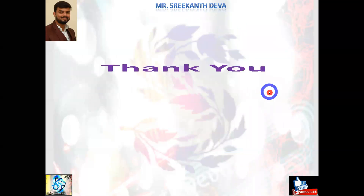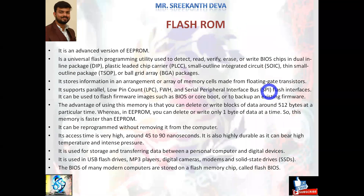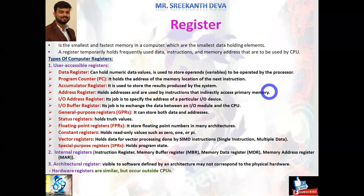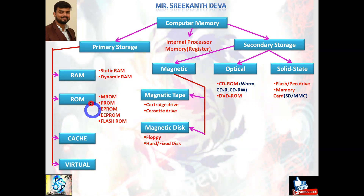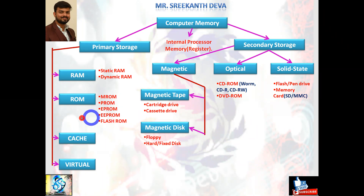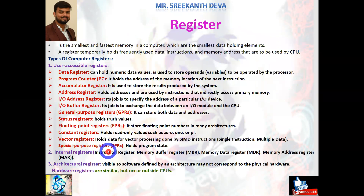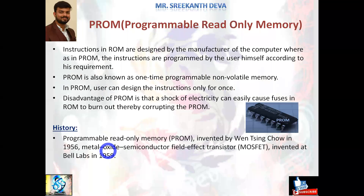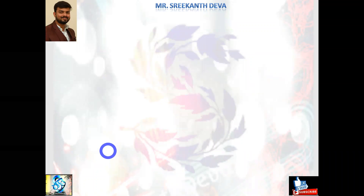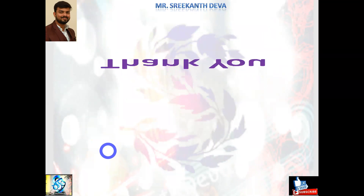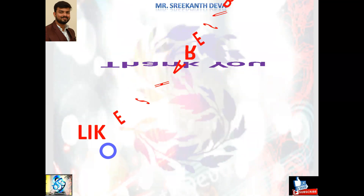This completes our discussion of all primary memories. Today we discussed in detail: RAM and ROM, cache and virtual memories. Internal process memories like registers; RAM — SRAM and DRAM; ROM — MROM, PROM, EPROM, EEPROM, Flash ROM; cache memory; and virtual memory. In the next two sessions, we will discuss secondary memories in detail. If you like my videos, please like and subscribe for more updated concepts in computer fundamentals and programming in C language. Thank you for watching.